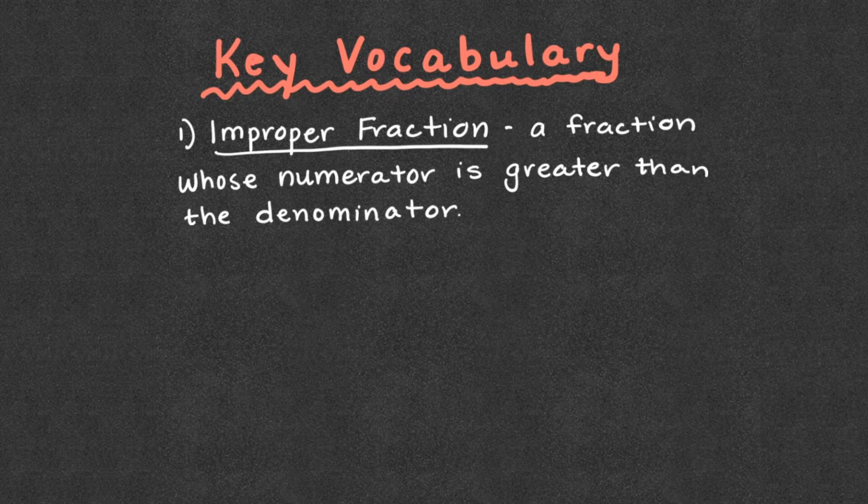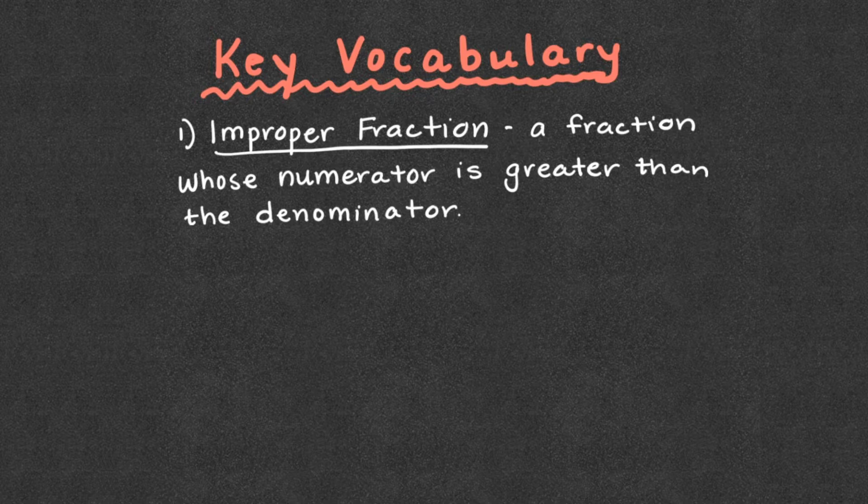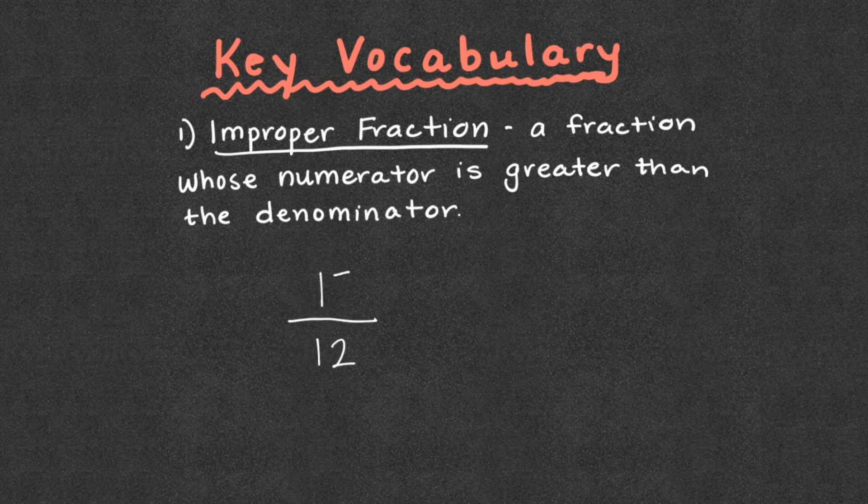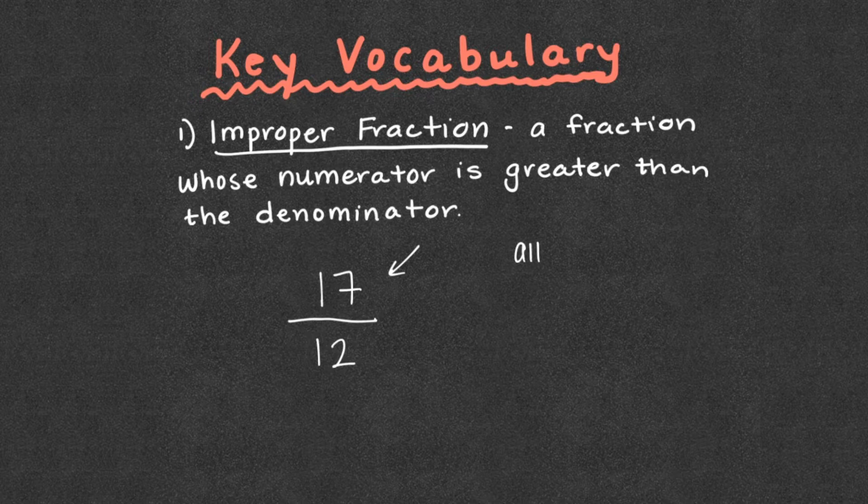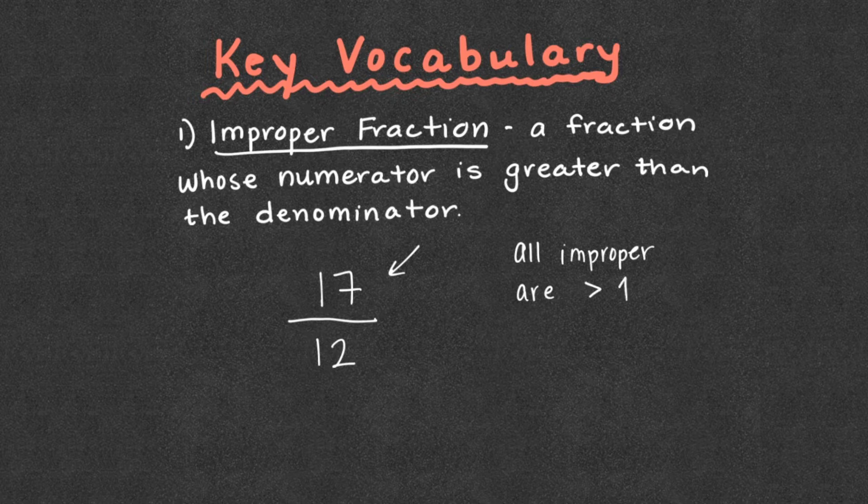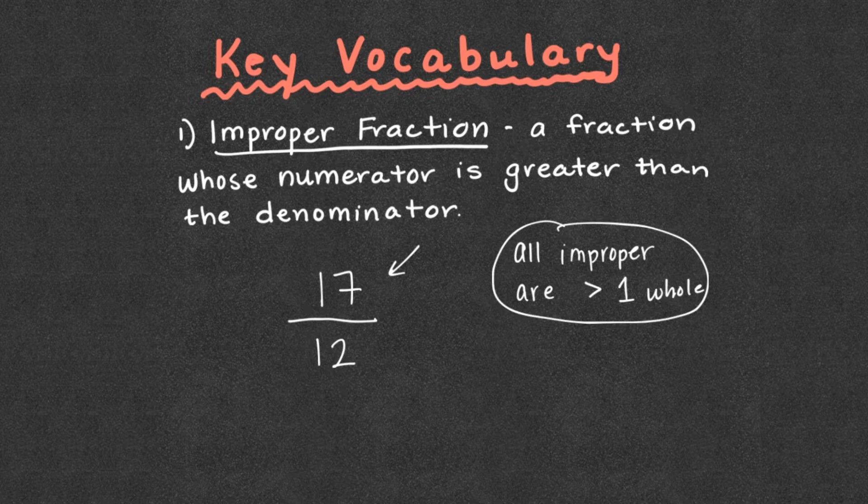Key vocabulary one is improper fraction. That is a fraction whose numerator is greater than the denominator. So if we had a fraction and our denominator was say 12 and our numerator was 17, this is an improper fraction because we have a larger number up top than our denominator. What does this mean? That all improper fractions are going to be greater than one whole.